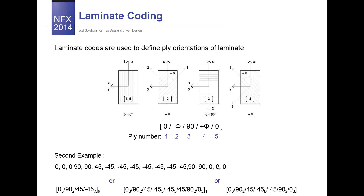Multiple laminae of the same angle are indicated by a subscript, and you can find the subscript in this example. This second example refers to the axis, and this refers to the symmetrical laminate. As you see, we have many layups, and at the bottom are three methods used to code this laminate, so you can spend some time finding the difference between them if you need.